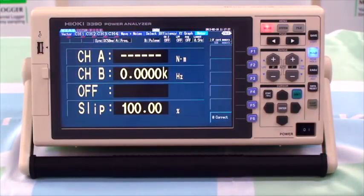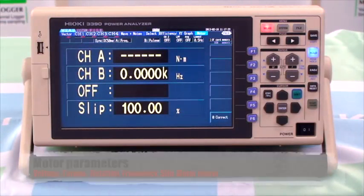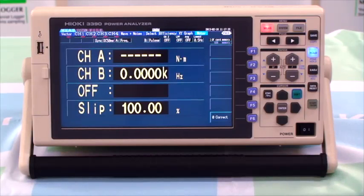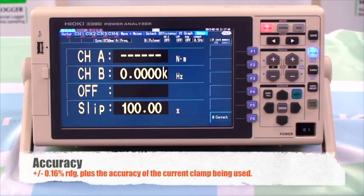The unit can also measure important motor parameters such as voltage, torque, rotation, frequency, slip, and motor power using the optional motor testing option. The screen is a 9-inch TFT LCD display and the unit's accuracy is plus or minus 0.16% of reading plus the accuracy of the current clamp being used.